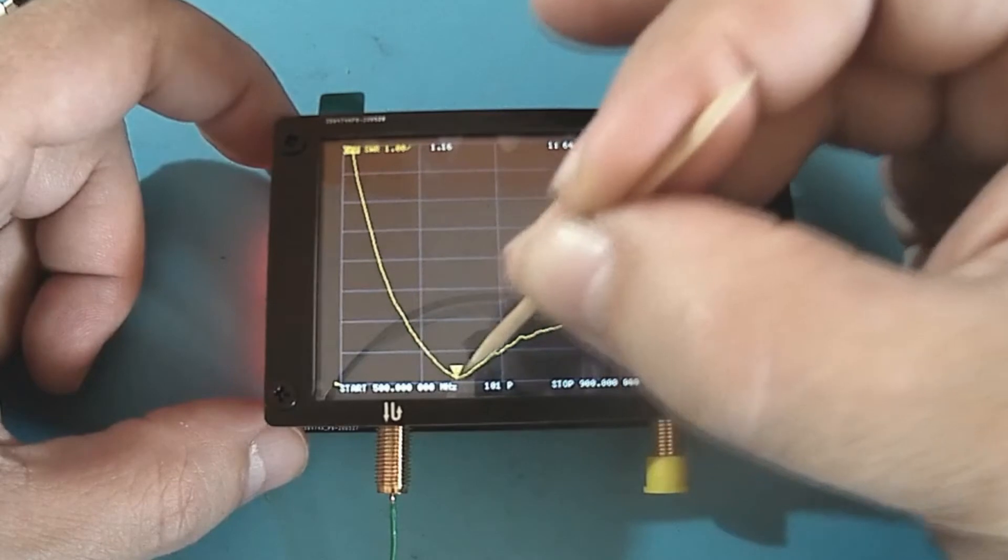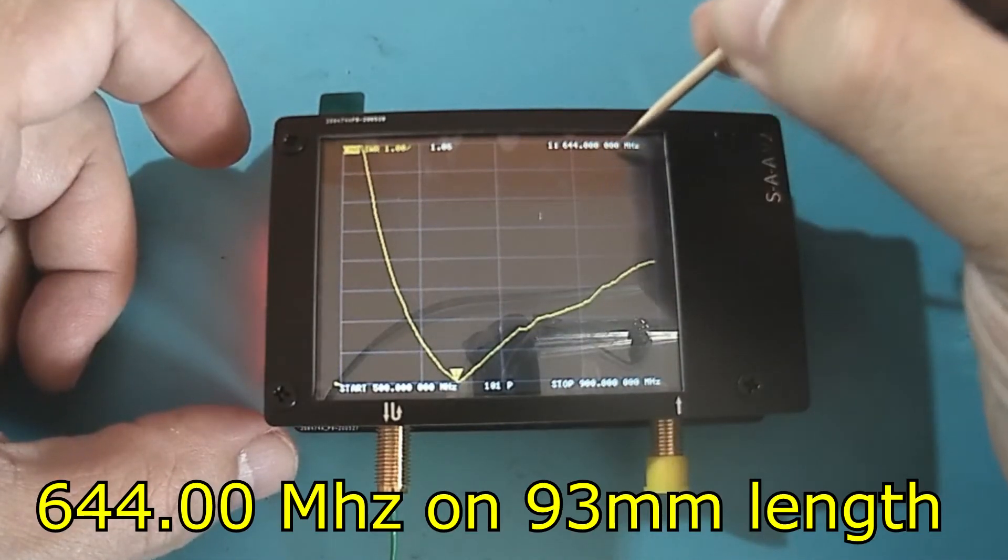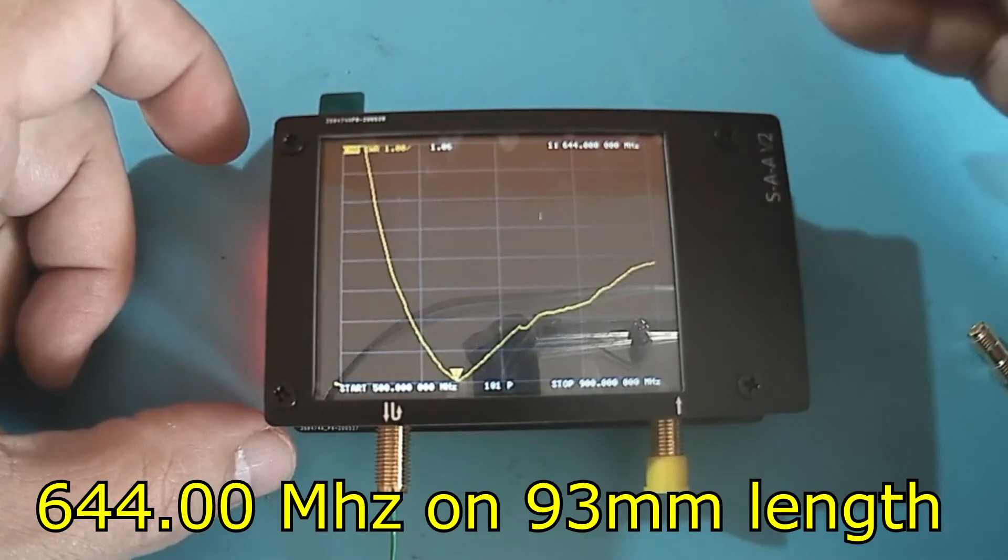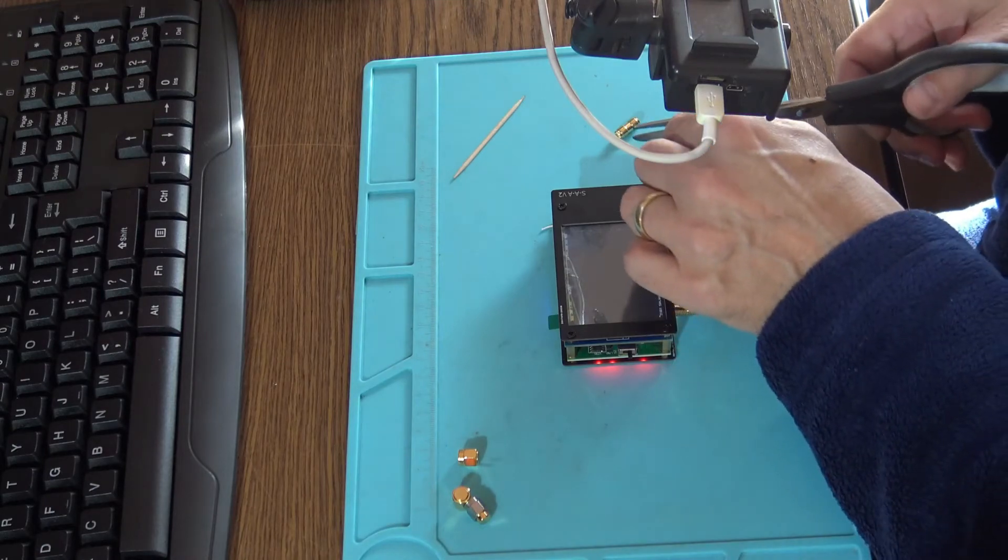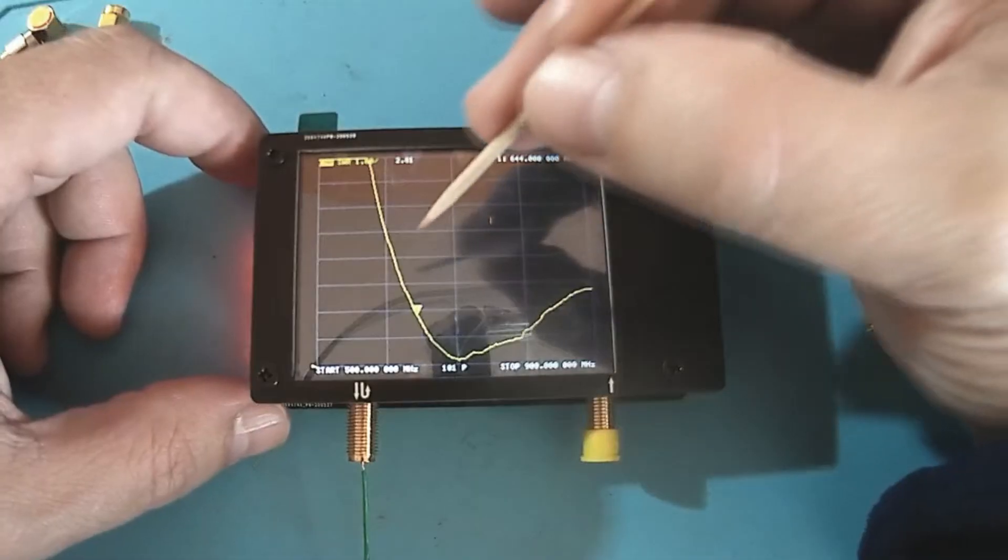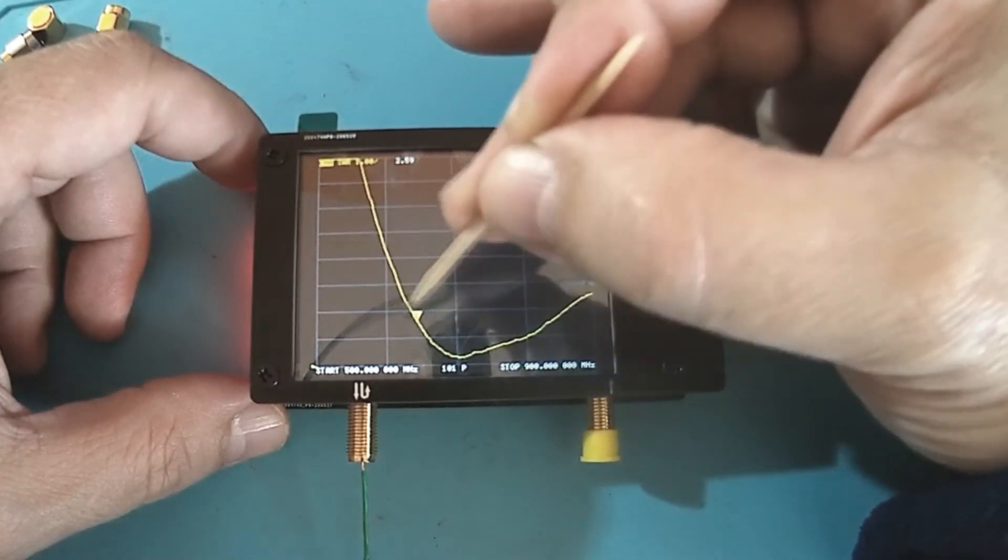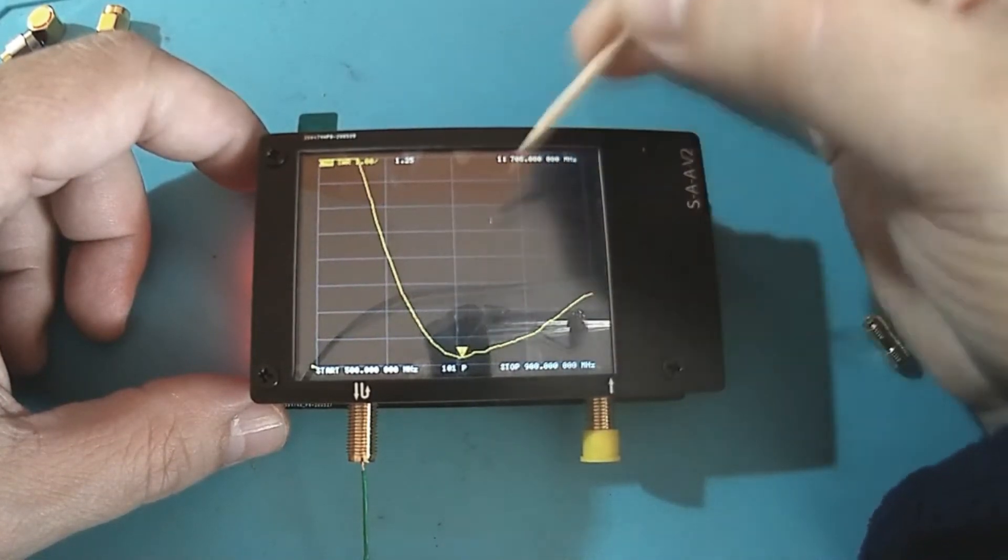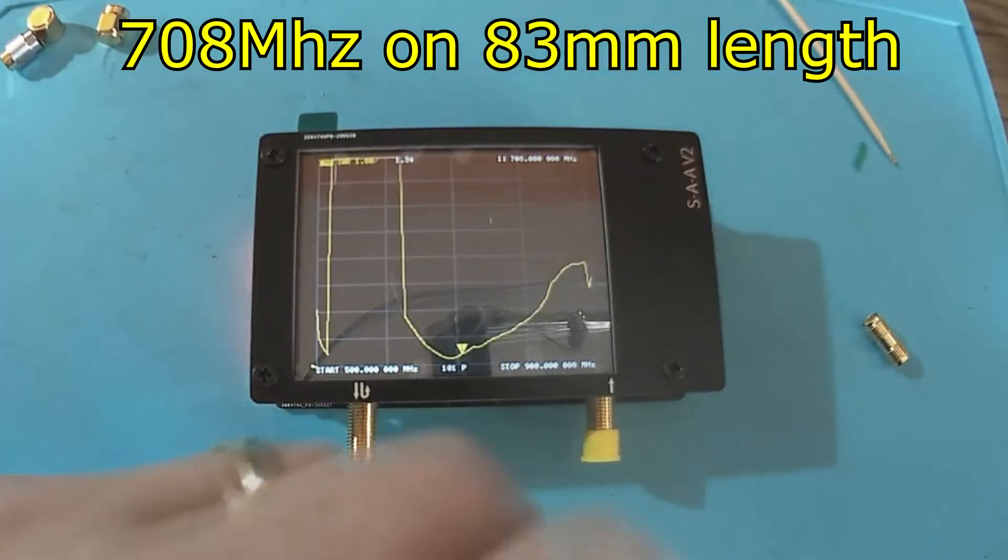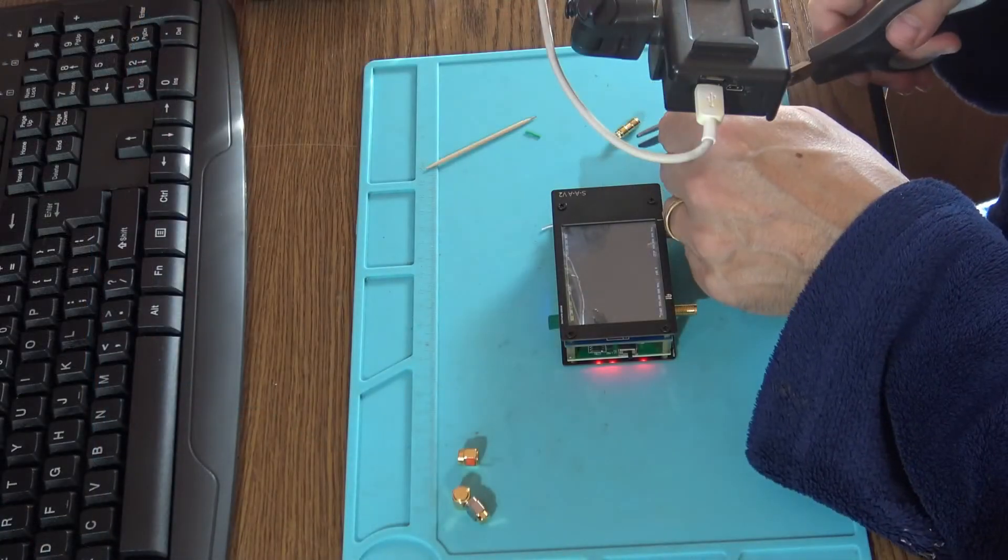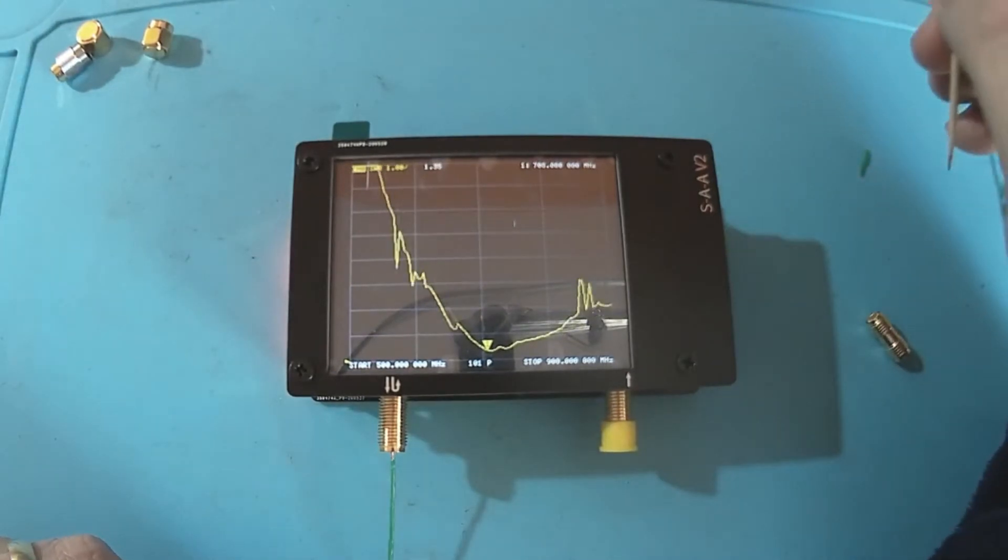So this is exactly the resonating frequency, 644 megahertz. Okay, so let's cut a little bit, one centimeter off. And as you can see, the frequency went up, 708. When you make it shorter, the frequency is rising.